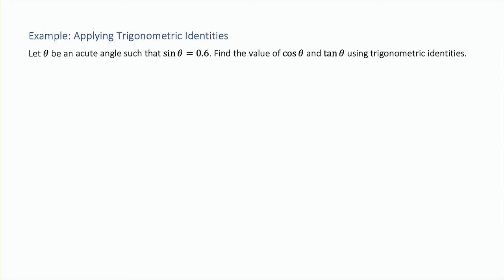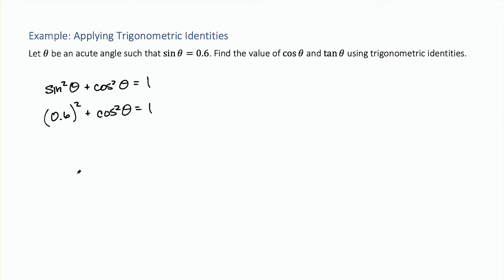Let's use identities to find some trigonometric values. Let theta be an acute angle such that sine of theta equals 0.6. To find cosine of theta, we use the Pythagorean identity: sin²θ + cos²θ = 1. Substituting, we get 0.6 squared plus cos²θ = 1, so 0.36 plus cos²θ = 1, and subtracting gives cos²θ = 0.64.